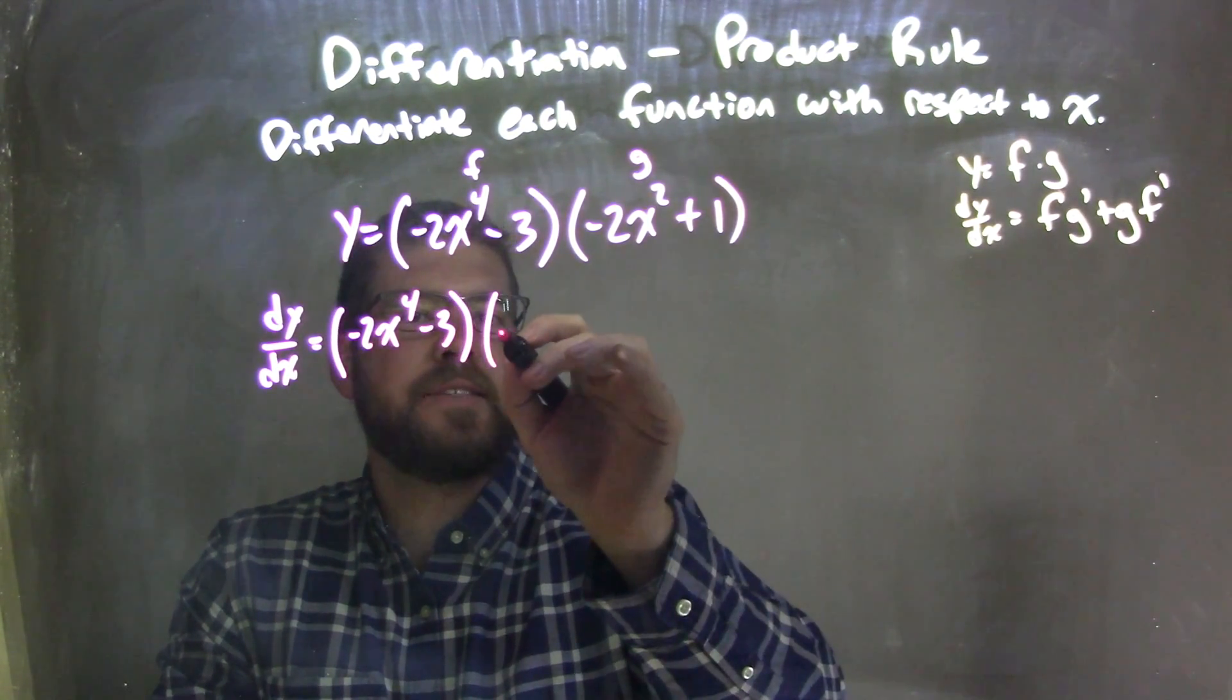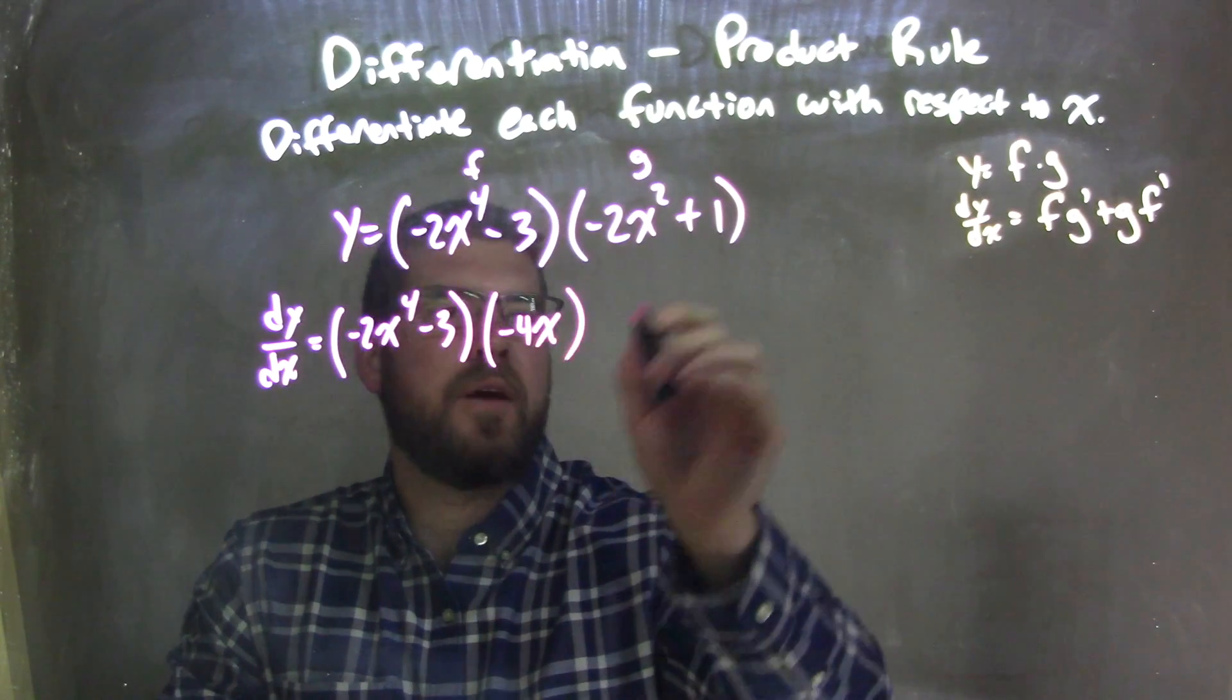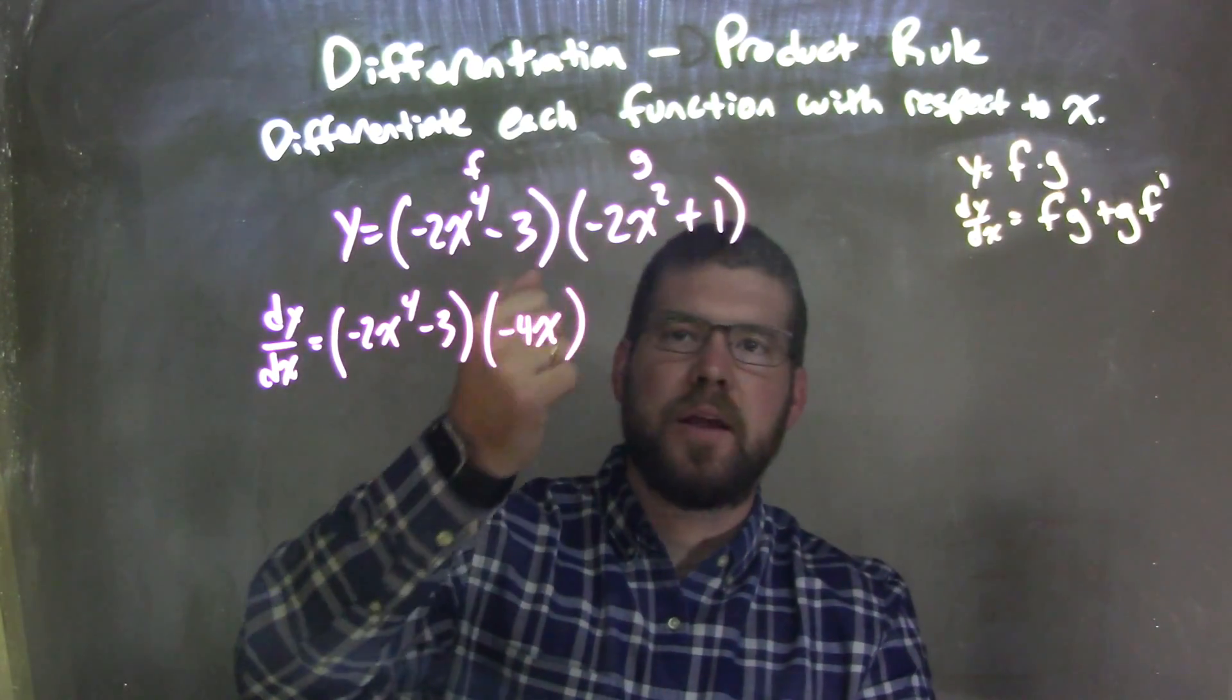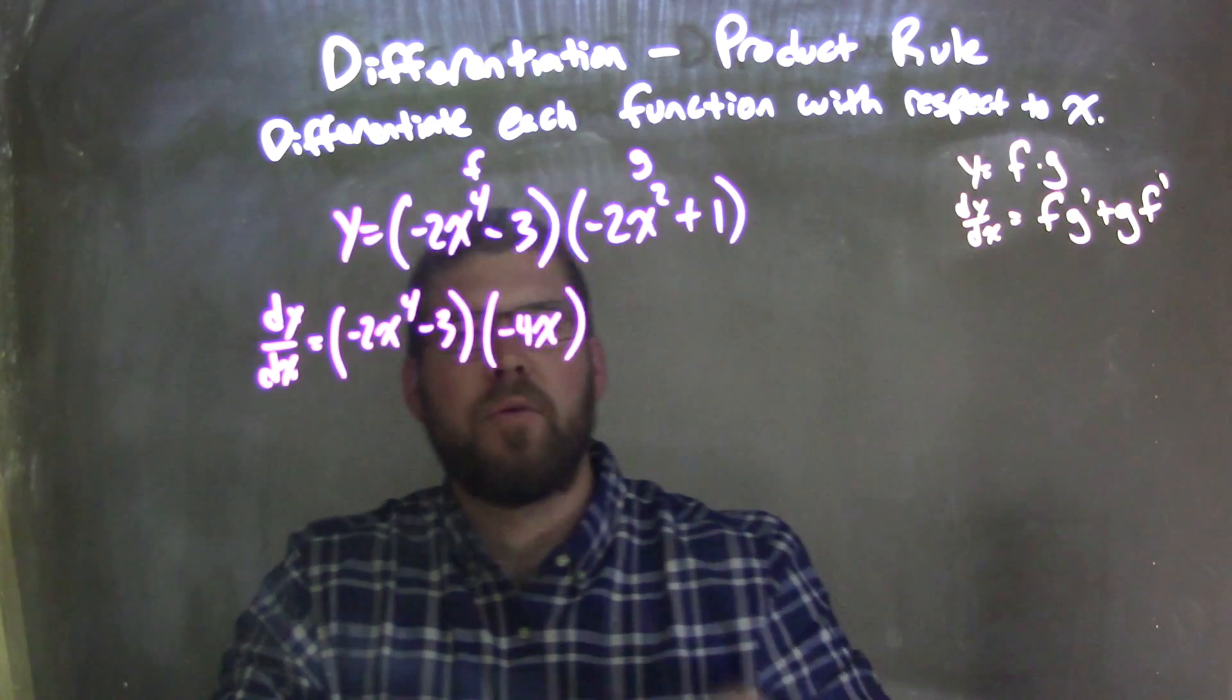Derivative of g is negative 4x, right? Only the plus 1 gets eliminated, then we take the derivative of it, then the 2 comes down into the power 1.